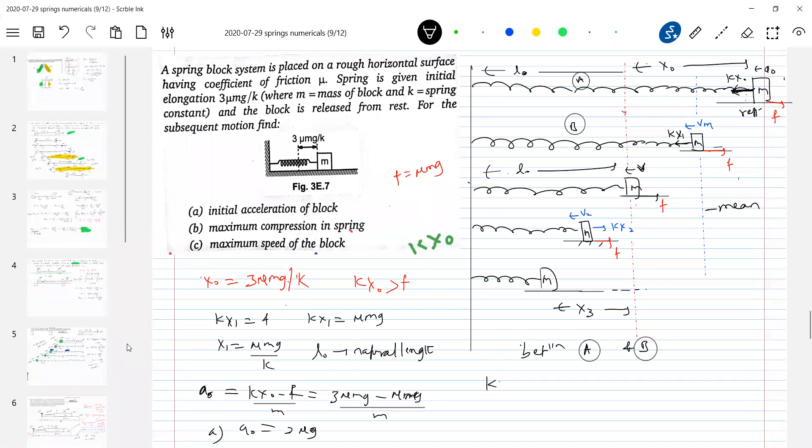Between A and B. Kx0 squared by 2 should be equal to work done by friction. Friction, how much of work it will do? F into x0 minus x1, because what is the displacement of block? x0 minus x1. This should be equal to plus kx1 squared by 2 plus mVm squared by 2. So we know x0, we know x1, we know f. Substituting all that, we'll get the expression for Vm. I'll write it solved later on.